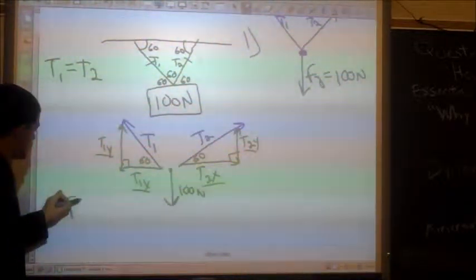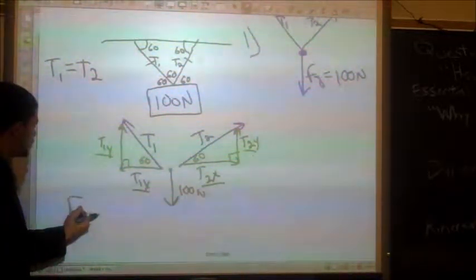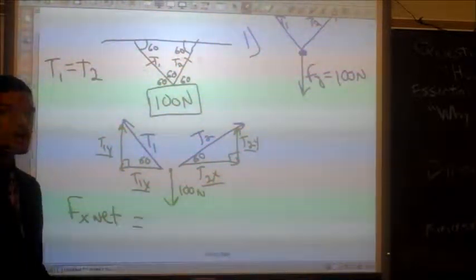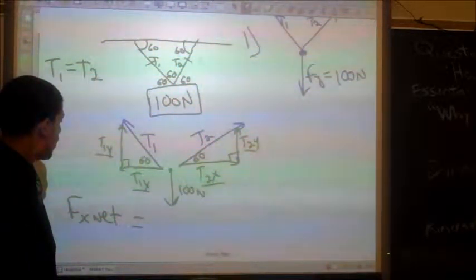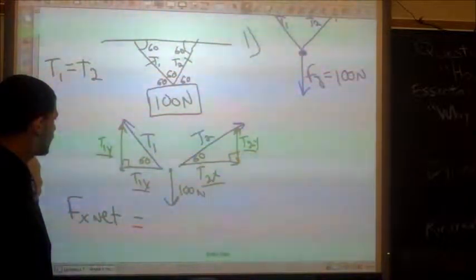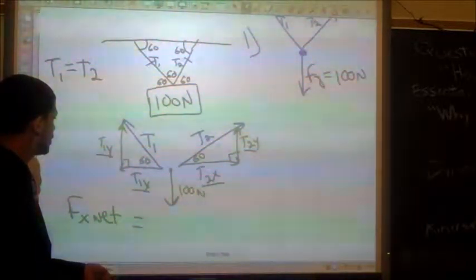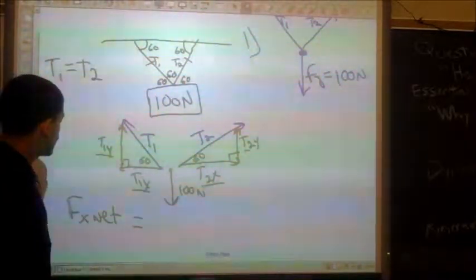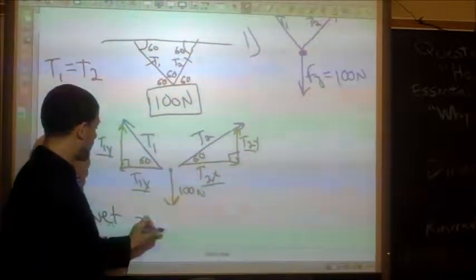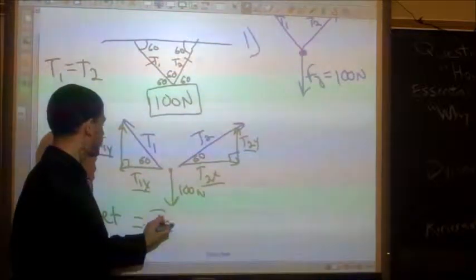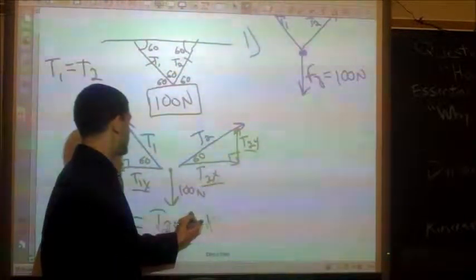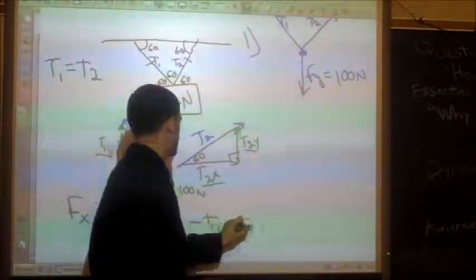So let's do all of our forces in the x direction. So now we look back at our free body diagram, and the only forces that I have in the x direction are t1x and t2x. Let's say right is positive and up is positive. So in this case, I have a positive t2x minus t1x equals zero.